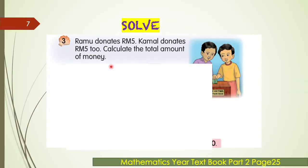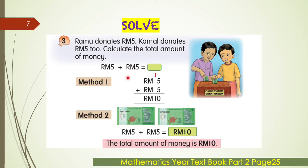Look at example three. Ramu donates 50 cents and Kamal donates 50 cents too. Calculate the total amount of money. Write the number sentence: 50 cents plus 50 cents. Method one — write in standard written method: 50 cents plus 50 cents equals RM1.00. Method two — 50 cents for Ramu and 50 cents for Kamal together also makes RM1.00. So the total amount of money is RM1.00.